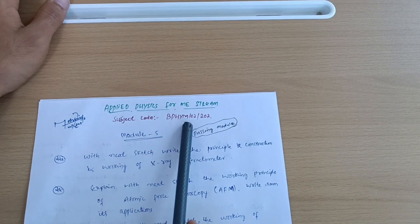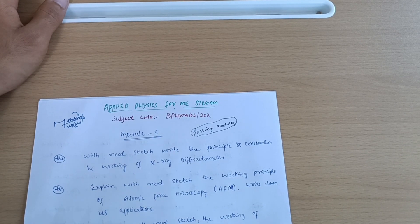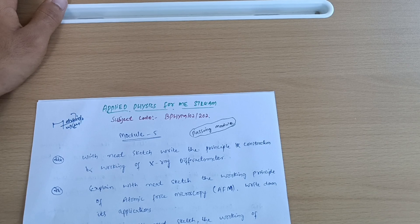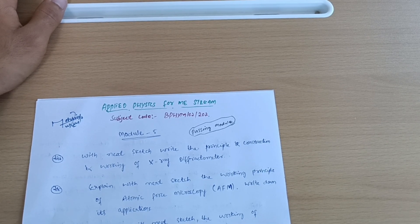Subject code is BPHYM102 or 202. If somebody has backlog also, they can also repeat these important questions. You should know one thing - in each and every subject, there are two ways to pass the subject.